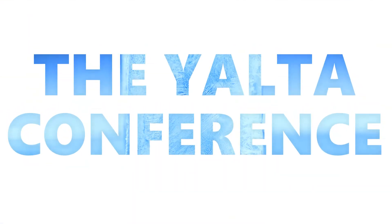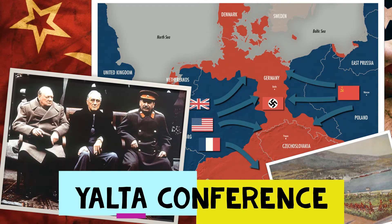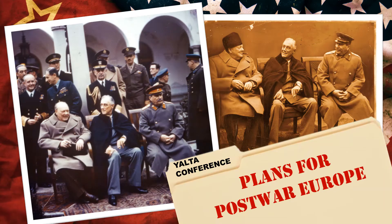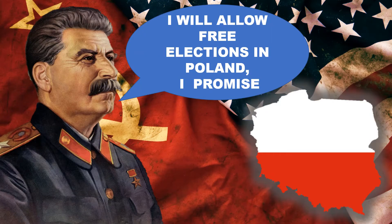The Yalta Conference: In 1945, as the Western allies were ready to occupy Nazi Germany from the west and the Soviet Union was liberating Eastern Europe, Churchill, Stalin, and Roosevelt met in the Soviet resort city of Yalta. At the Yalta Conference, the Big Three laid plans for a post-war Europe and its reconstruction. They agreed to divide Germany into separate occupation zones and confirmed the structure of the United Nations, which had been approved at the Dumbarton Oaks Conference. Stalin promised to allow free elections in Poland once the war ended.